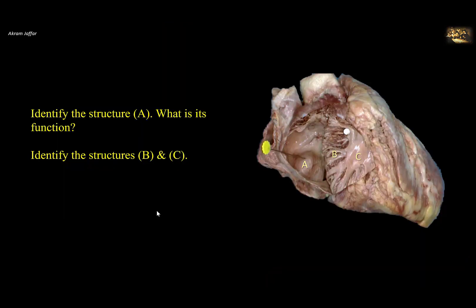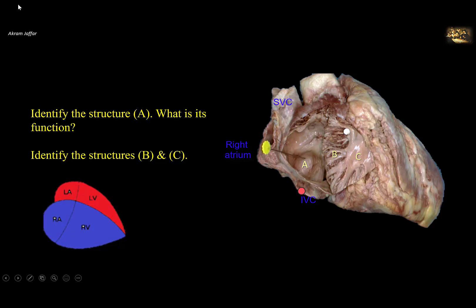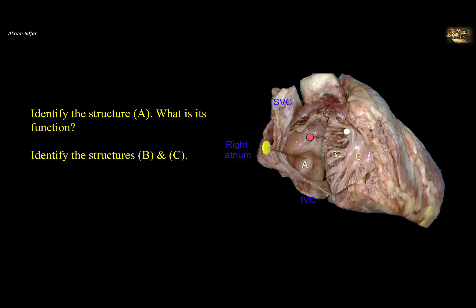Identify structure A and its function, and identify structures B and C. This is an anterior view of the heart showing the anterior wall of the right atrium cut and reflected to the left. Note the superior vena cava and inferior vena cava, both connected to the right atrium. In the anatomical position, the right side of the heart is anterior to the left side. When you open the anterior wall of the right atrium, you face the posterior wall, which separates it from the left atrium — in other words, the interatrial septum. Structure A is a thumbprint-sized depression in the interatrial septum, located just above the orifice of the inferior vena cava.